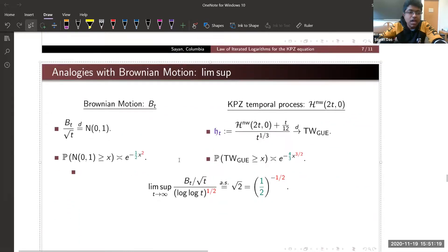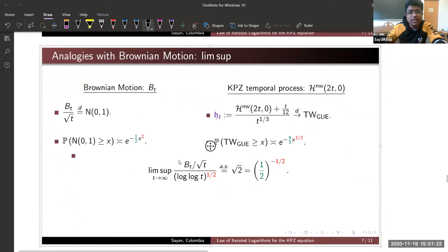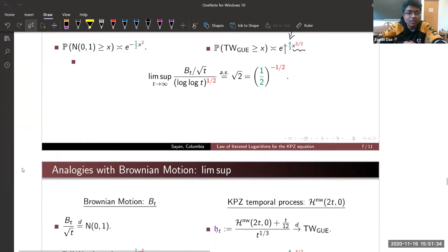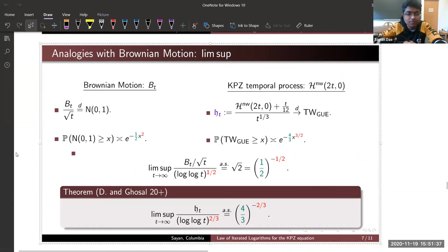What about the tails of the Tracy-Widem distribution? The upper tail of the Tracy-Widem distribution has essentially x^{3/2} decay and a pre-factor of 4/3. If we have a law of iterated logarithm, you can guess what it should be. Our law of iterated logarithm grows like log log t to the power 2/3, and the exact constant is given by the tail of the Tracy-Widem distribution.